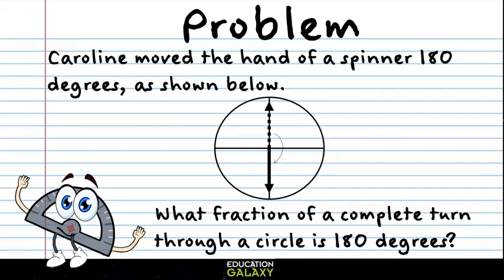Let's look at this one. Caroline moved the hand of a spinner 180 degrees, as shown below. What fraction of a complete turn through a circle is 180 degrees? Well, 180 degrees out of 360. If we simplify this fraction...